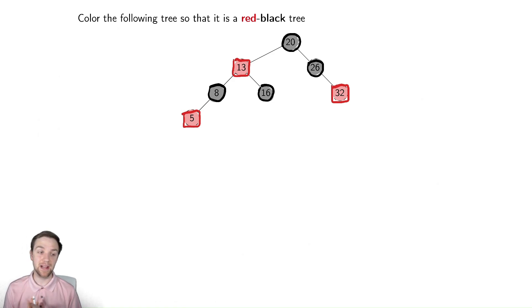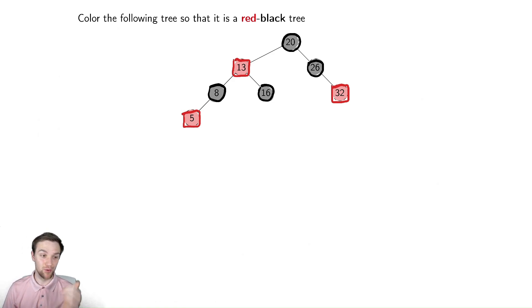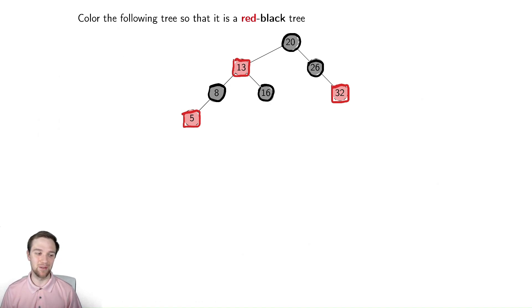Having introduced red-black trees, the next thing we're going to do is everybody's favorite thing: we're going to prove that they are correct and that they accomplish the goal that we want them to. That'll be our next step.